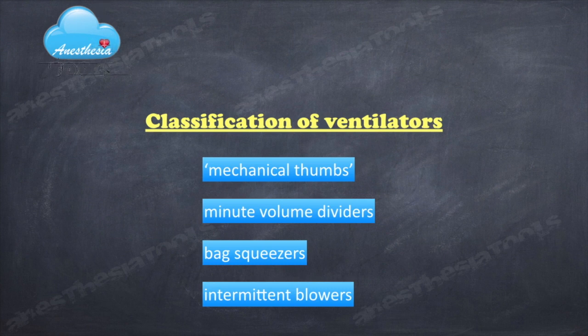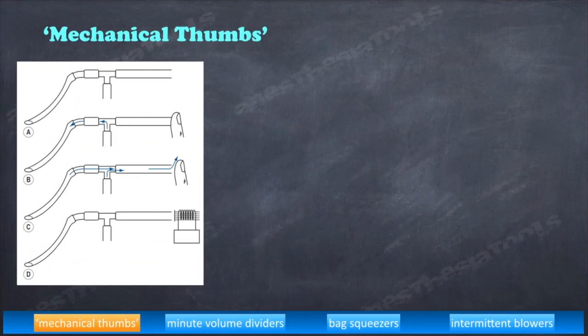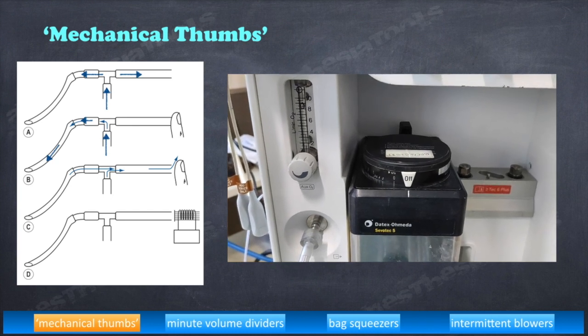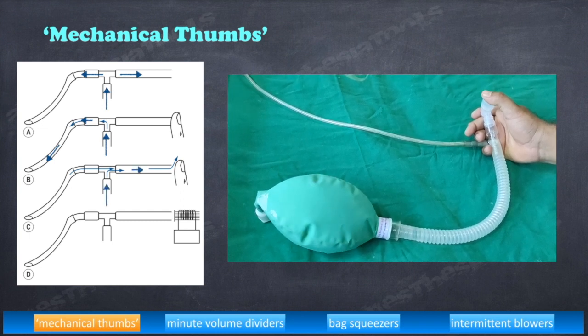There are different classifications described for anesthesia ventilators. Let us follow this classification based on the mechanism of generation of positive pressure. First one: mechanical thumb. Here, pressurized gas from cylinders or pipelines is administered to a patient as a continuous flow into the simplest of breathing systems, the TPS. The anesthetist or operator occludes the open end of the TPS with his thumb. My friend Mr. Anuraj is demonstrating it.